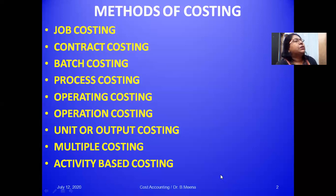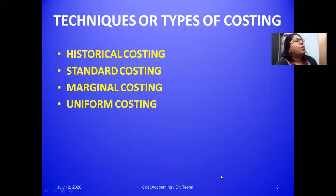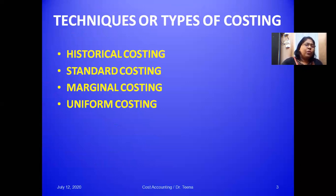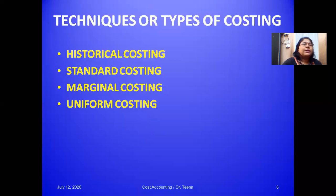Now let's look at the techniques, or types, of costing. There are four techniques: historical costing, standard costing, marginal costing, and uniform costing. Let me explain each one by one.